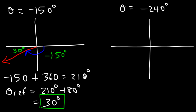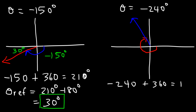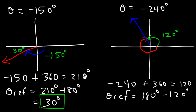Now let's try negative 240. So this is negative 90, negative 180, and here's negative 240 — it's in quadrant 2. Let's find a coterminal angle by adding 360: we get 120. So this angle is also equal to 120. Since it's in quadrant 2, the reference angle is 180 minus 120, which gives us 60. And you can clearly see that this angle of 60 is between the x-axis and the terminal ray.